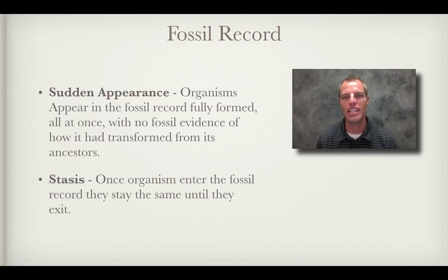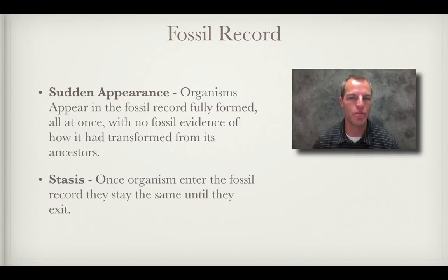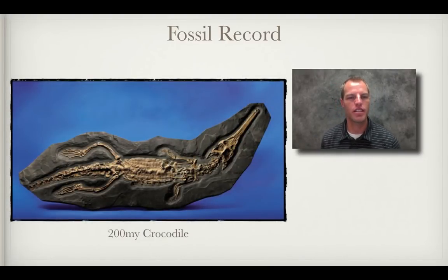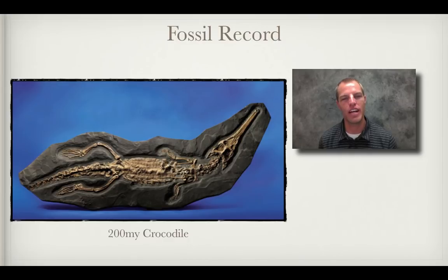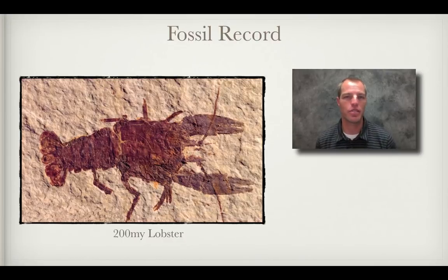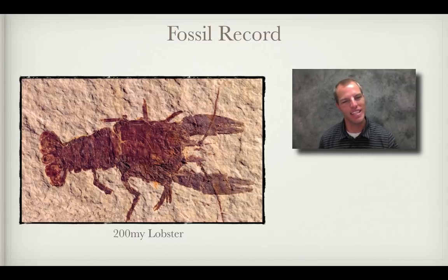There are other organisms that we would say are in stasis, meaning once the organism entered the fossil record, they stayed the same until they exit. Many organisms have died through some catastrophic event and are now extinct, while some are still alive today. An example is this crocodile, found in rock that scientists would say is around 200 million years old, which looks very close — if not identical — to what a crocodile looks like today. Similarly, this lobster in rock dated to about 200 million years old looks like a lobster of today. Evolution has not taken place for this lobster for at least the last 200 million years.